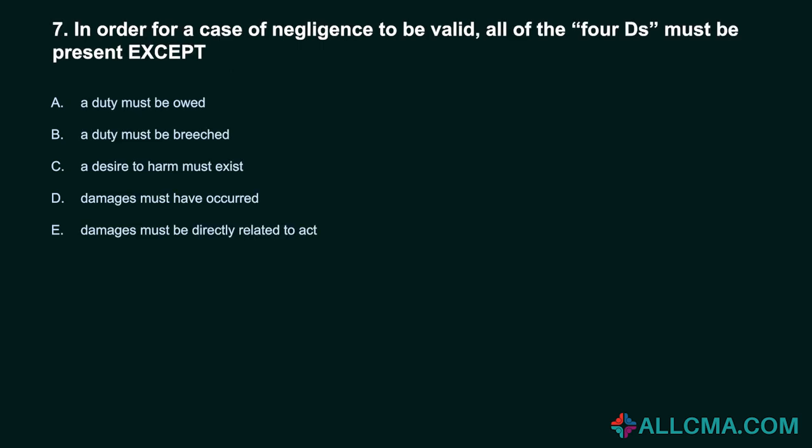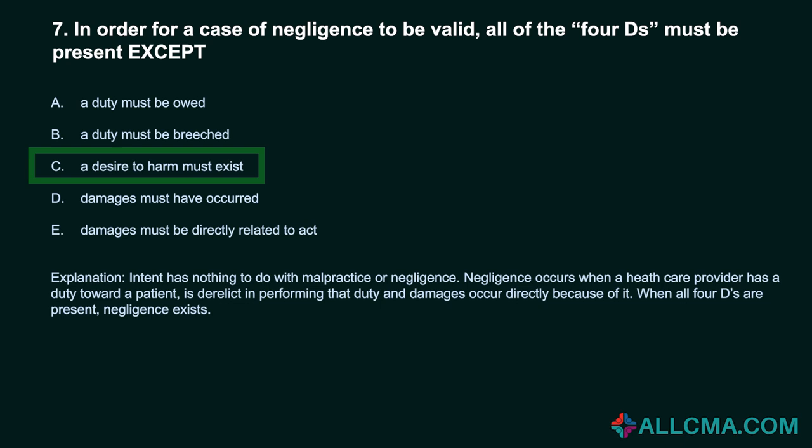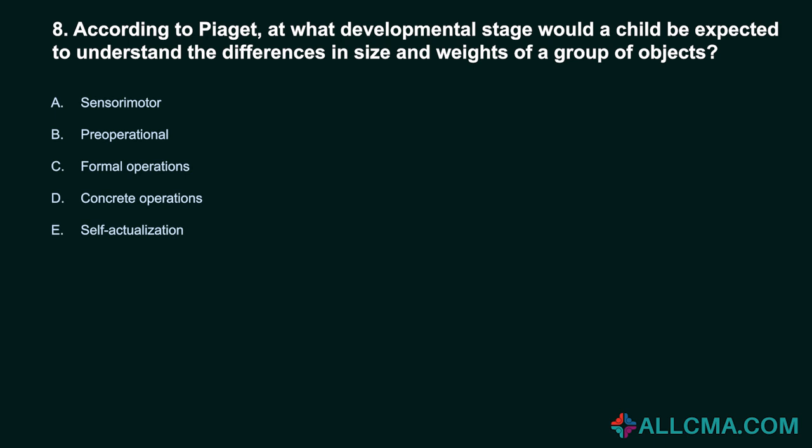Question 7: In order for a case of negligence to be valid, all four Ds must be present except: a) a duty must be owed, b) a duty must be breached, c) a desire to harm must exist, d) damages must have occurred, e) damages must be directly related to the act. Correct answer: C, a desire to harm must exist. Intent has nothing to do with malpractice or negligence. Negligence occurs when a healthcare provider has a duty toward a patient, is derelict in performing that duty, and damages occur directly because of it.